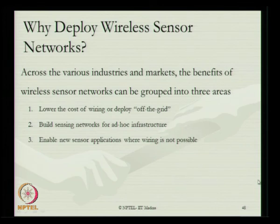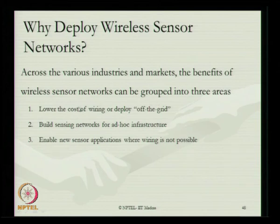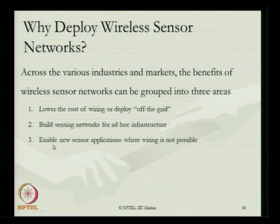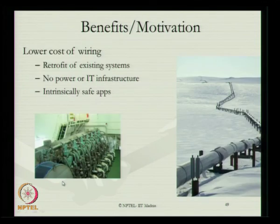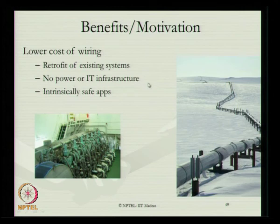The fundamental question: why deploy a wireless sensor network? Across various industries and markets, the benefits of WSN are grouped in three areas: lowering the cost of wiring or deployment, building sensing networks for ad hoc infrastructure, and enabling new sensor applications where wiring is not possible. Benefits and motivations include low cost of wiring, retrofit of existing systems, no power or IT infrastructure required, and intrinsically safe applications such as offshore pipelines.